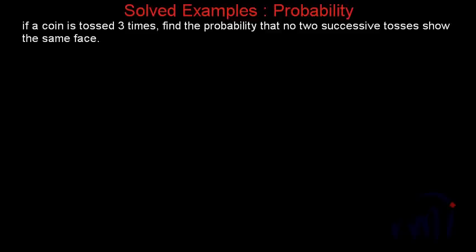In this video we are going to take three solid examples based on probability, and all of them are slightly tricky. The first problem statement says: if a coin is tossed three times, find the probability that no two successive tosses show the same face.